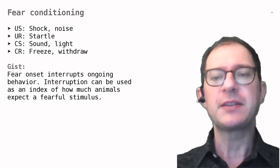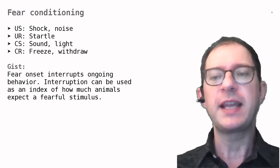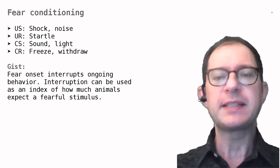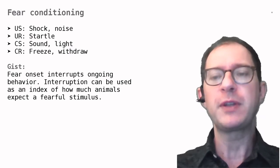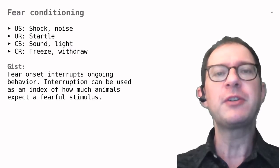In the next lesson we will study findings called overshadowing, blocking, overexpectation and others. All of these findings are observed across different Pavlovian preparations, so it is reasonable to think that they depend on similar learning processes.